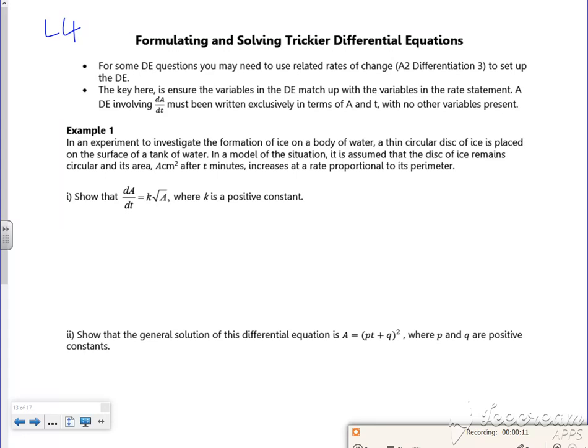So it says, in an experiment to investigate the formation of ice on a body of water, a thin circular disc is placed on the surface of a tank of water. In a model of the situation, it's assumed that the disc of ice remains circular and its area is A. It increases at a rate which is proportional to its perimeter.